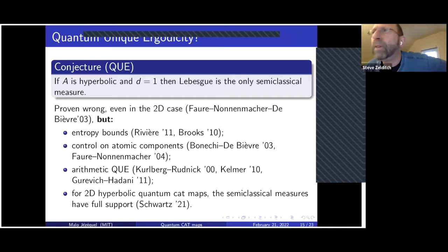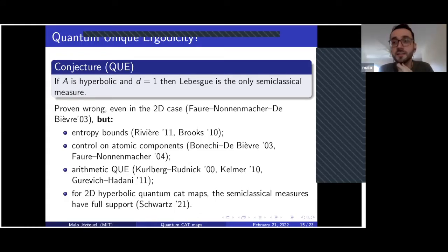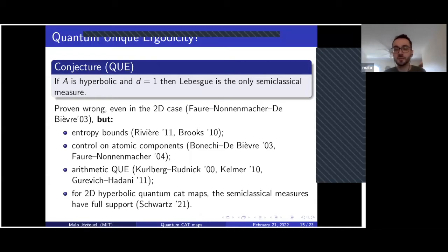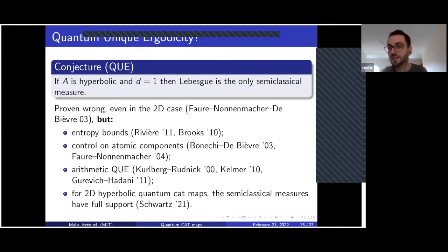The question is whether full support implies having a Lebesgue component. No — it's not known that full support would imply you have a Lebesgue component, because you could imagine having something fully singular but with full support. Then the result of Faure-Nonnenmacher-De Bièvre would not imply there is a Lebesgue component in the absence of atomic components.